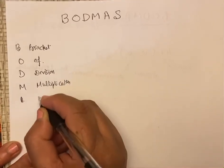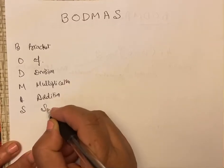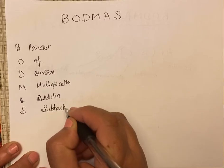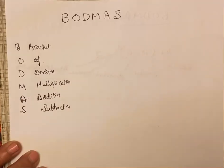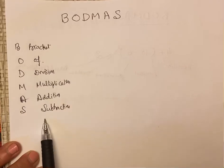A is addition and S is subtraction. BODMAS is short form of all this.